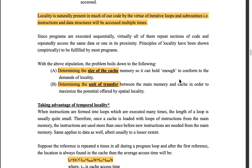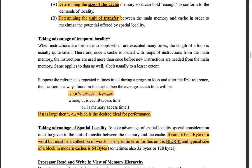We have to determine the size of cache memory so that it can hold enough to conform to the demands of locality. The question is how much should the cache memory be, and then determine what is the unit of transfer — how much data we have to grab from main memory and copy it into the cache.